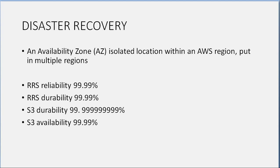Availability Zone (AZ): an isolated location within an AWS region. Put resources in multiple regions. RRS (Reduced Redundancy Storage) reliability is 99.99%. S3 durability is 99.999999999% — eleven nines. Just remember S3 durability has the most nines after the decimal point. S3 availability is 99.99%. So it's either 99.99% availability or 99.999999999% durability — that's all you need to remember.